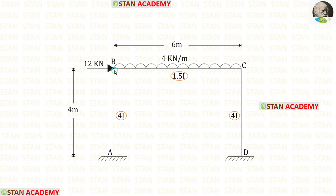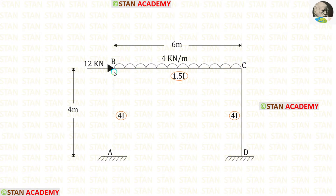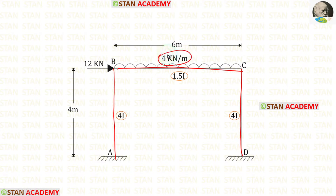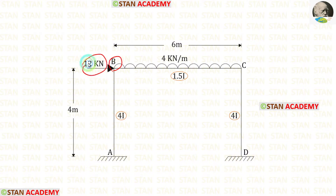In this frame we have the columns AB and CD and the beam BC. In the columns there are no loads. In the beam BC we have a uniformly distributed load of 4 kN per meter acting for the full span. At point B we have a nodal point load of 12 kN acting towards the right side.